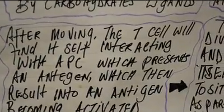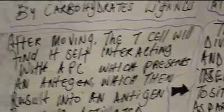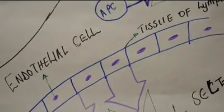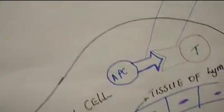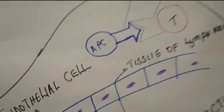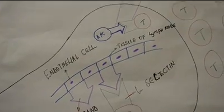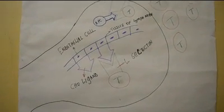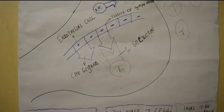After the movement of the T-cells, the T-cells will find themselves interacting with the APC antigen-presenting cell, which is presenting a certain antigen, which then results in the T-cell becoming activated. The T-cell then divides, differentiating itself and migrating to the site of infection as part of the immune response towards an infection.